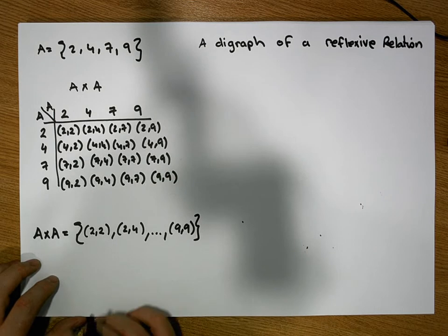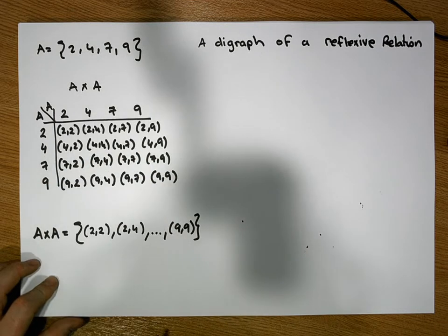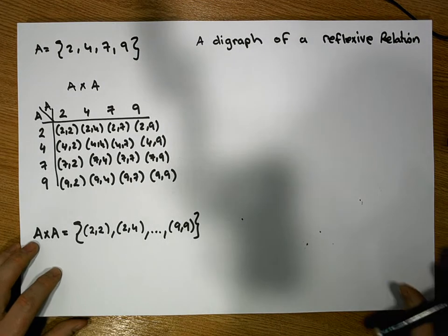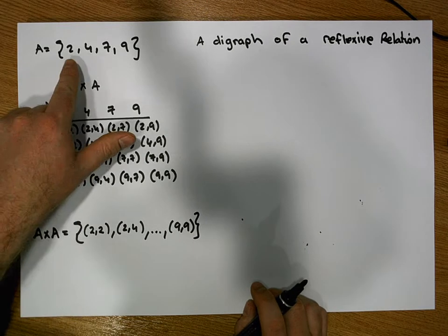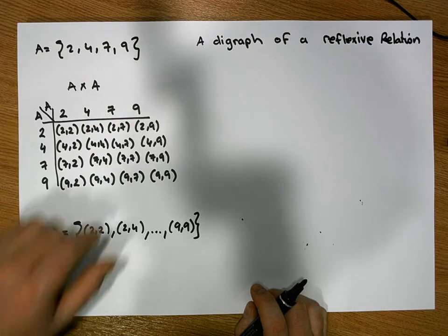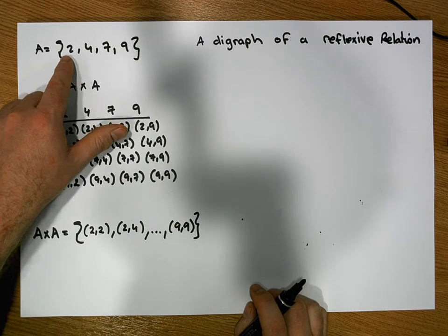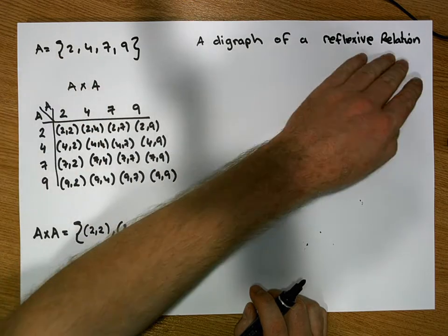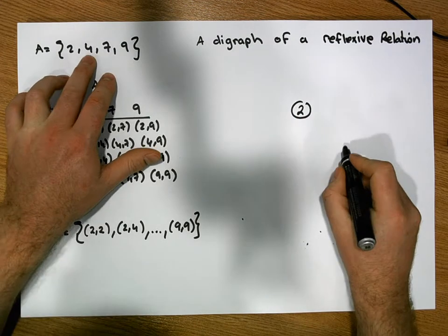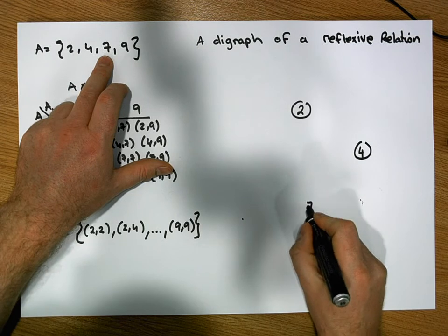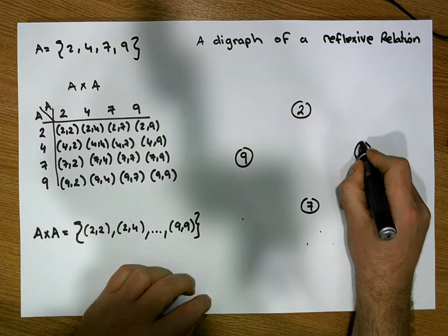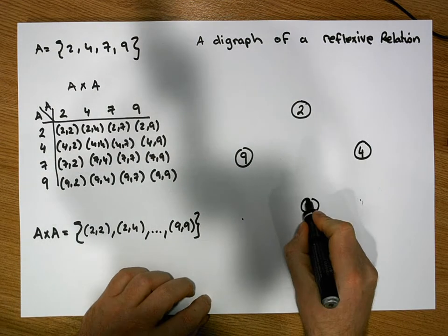We're free to create relations as any subset of this set. A digraph is a graph that graphically presents the structure of a relation on a particular set, and it must contain a node for each element in the set the relation was constructed upon. So our digraph must contain a node for 2, a node for 4, a node for 7, and a node for 9.